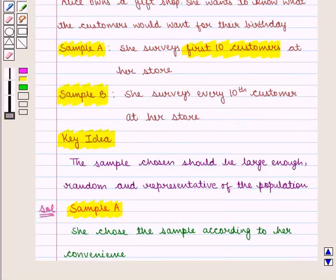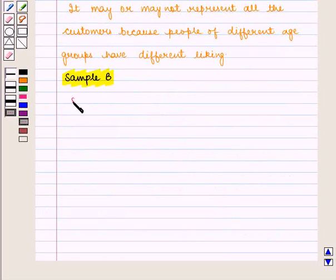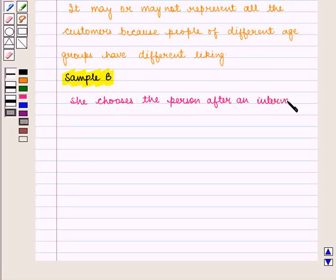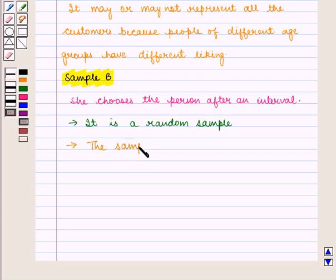For Sample B, she asks every 10th customer what they would want for their birthday. She chooses the person after an interval. It is a random sample, and the sample will be large enough to make predictions.